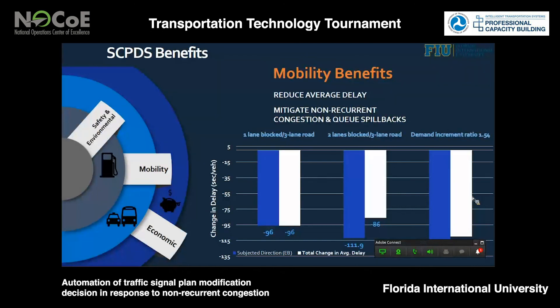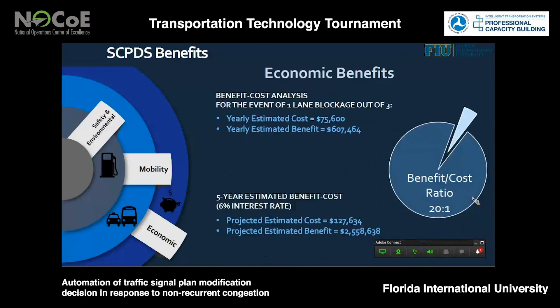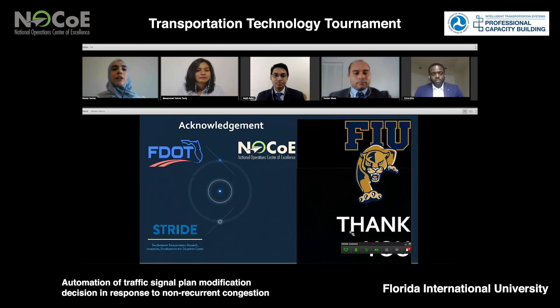Finally, to assess the economic benefits, we ran a benefit-cost analysis using simulation data and the yearly estimated cost of around $75,000. We estimated a yearly benefit of around $600,000. We also did a five-year projection using a 6% interest rate, and the benefit-cost ratio came out to be 20 to 1. Thank you for attending. We would like to acknowledge FDOT, the National Operations Center of Excellence, and STRIDE for their support. Thank you.